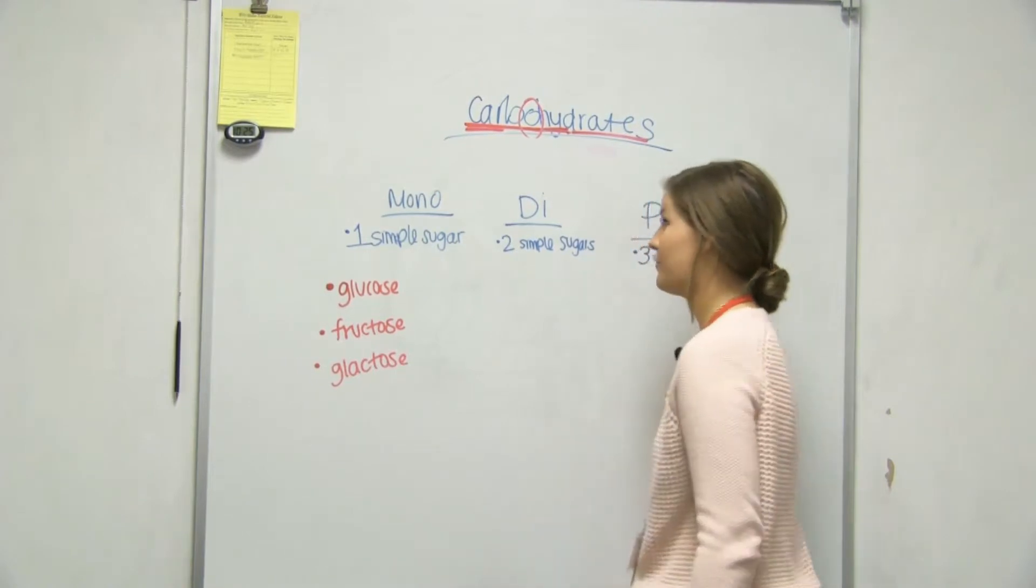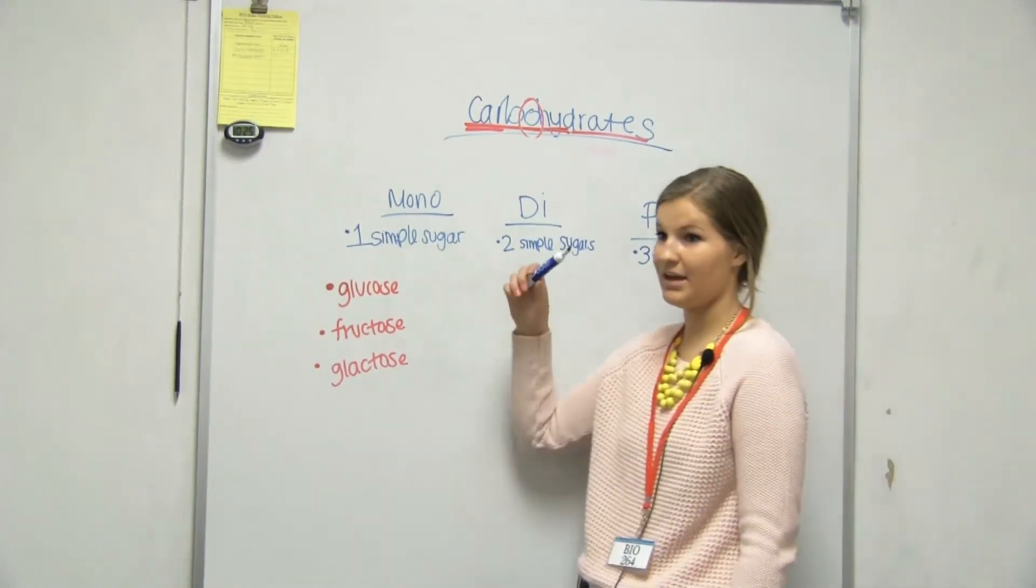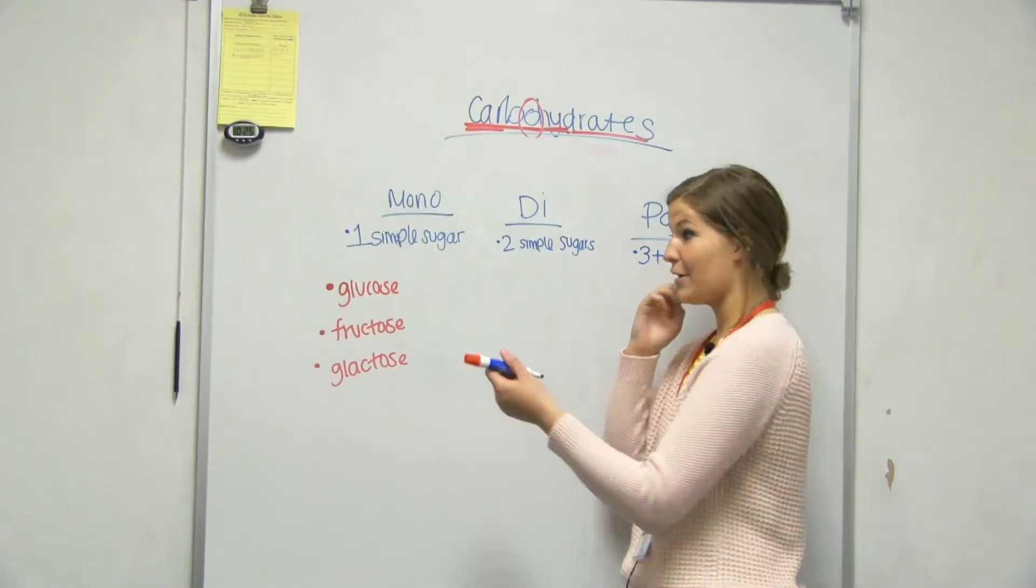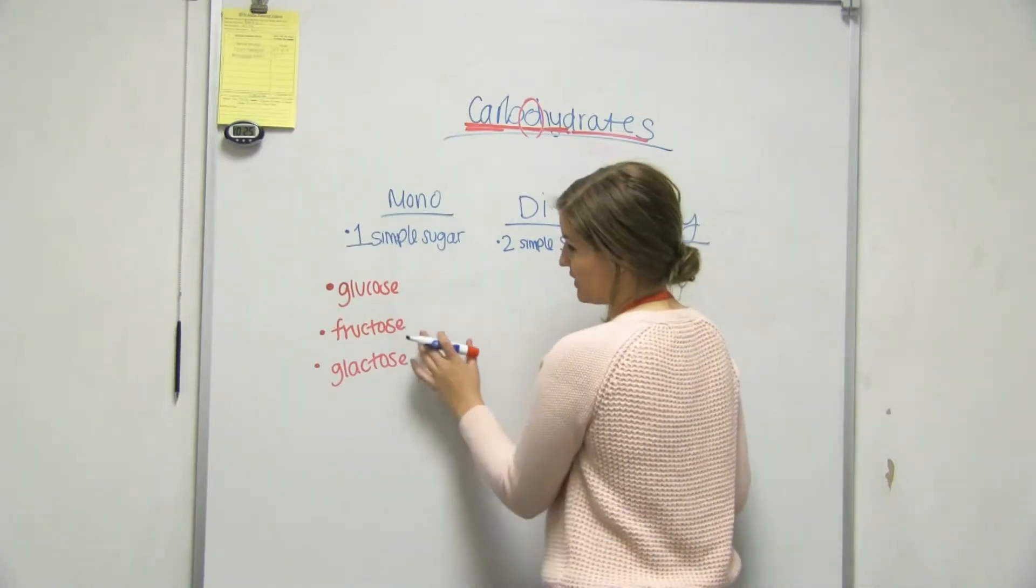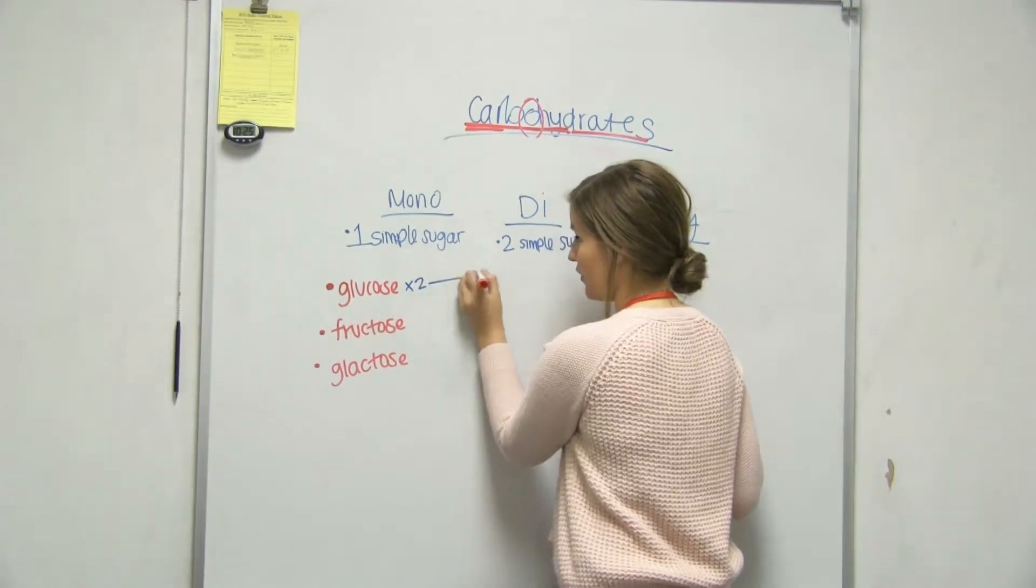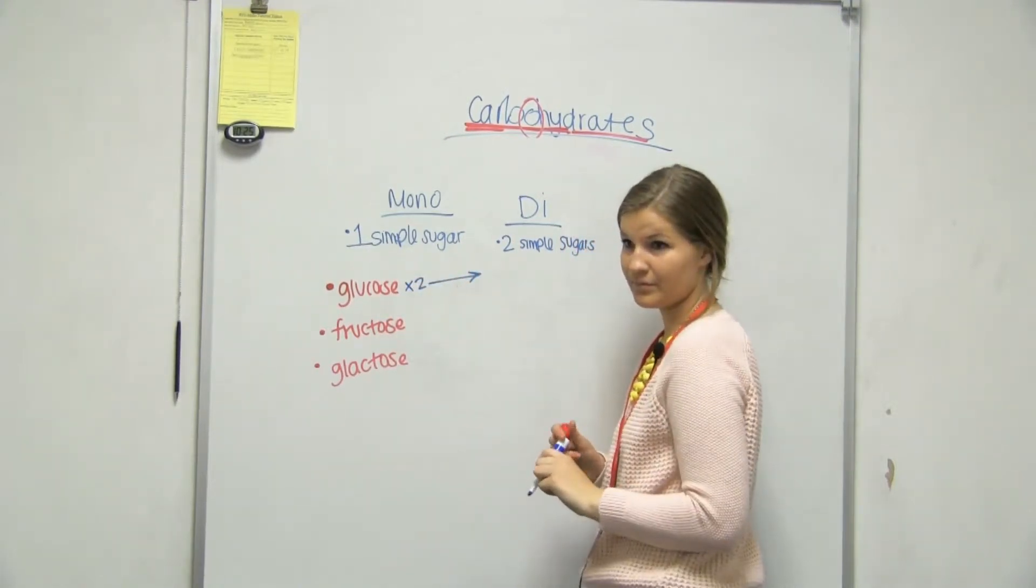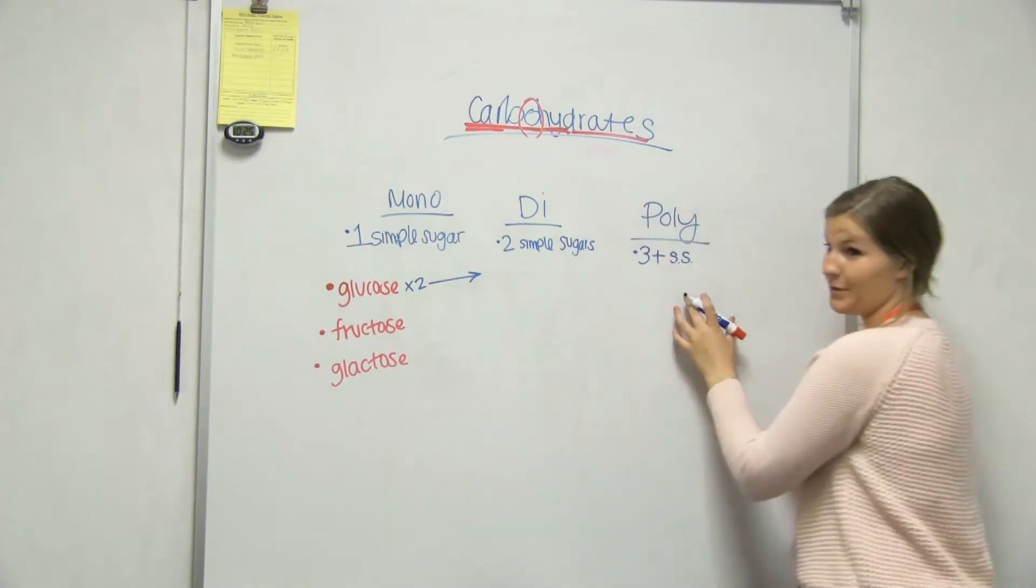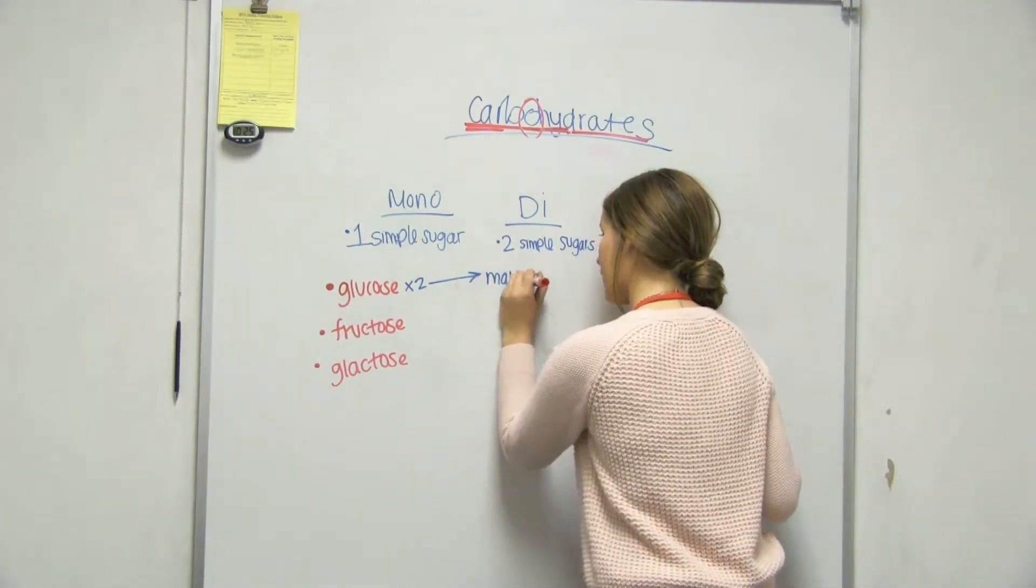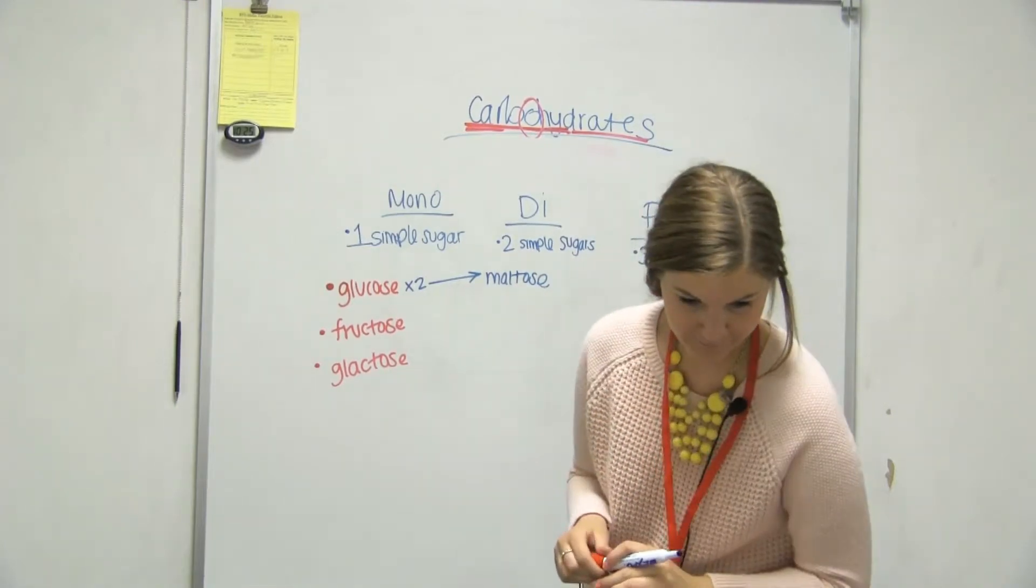So then when we have a disaccharide, we're going to take two of these simple sugars to make a disaccharide. So then like you said, they can be two different ones, like some we have this one and this one, but if we have this, we're going to get what? Was that glycogen? That was, glycogen is going to be the one over here. Okay. This would be maltose. Let's make sure.